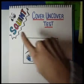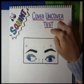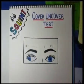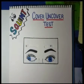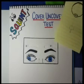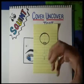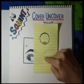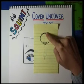Today we are going to talk about squint or strabismus and the cover-uncover test used to diagnose the type of squint. Squint is defined as misalignment of the visual axis of the two eyes. The visual axis is basically the imaginary line joining the object that the eye is seeing and the fovea centralis, where the image of the object is formed.